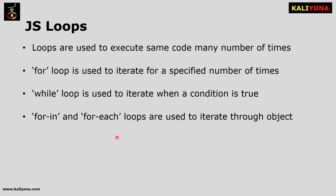For-in and for-each loops are used to iterate through objects. We use them when iterating over array properties or object properties.